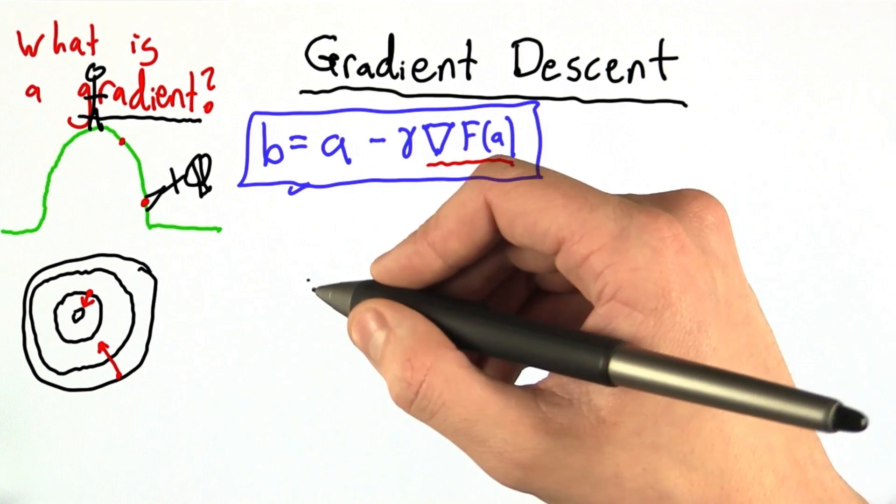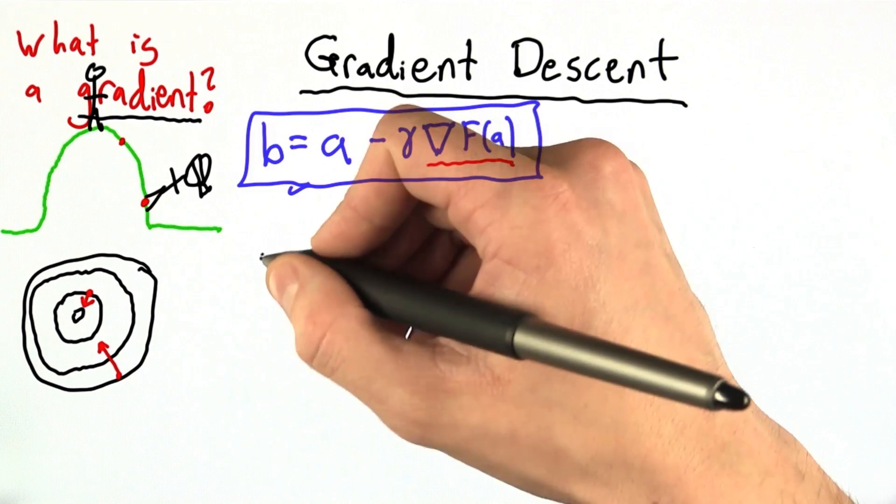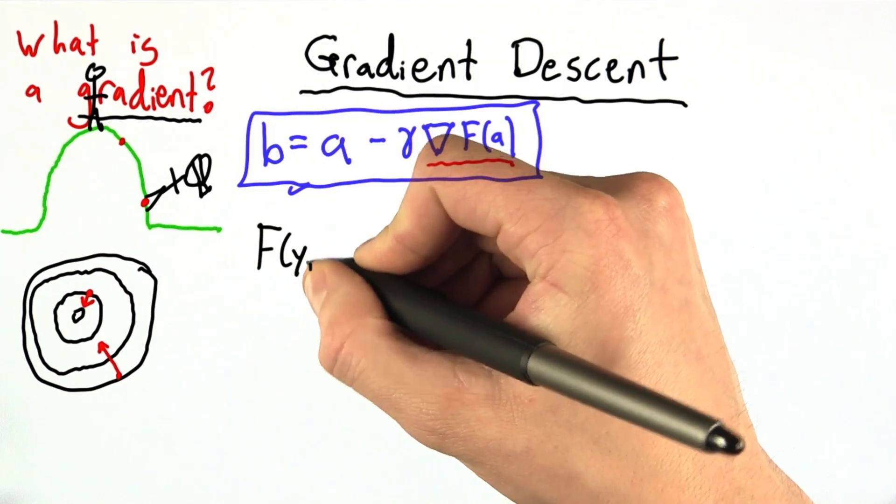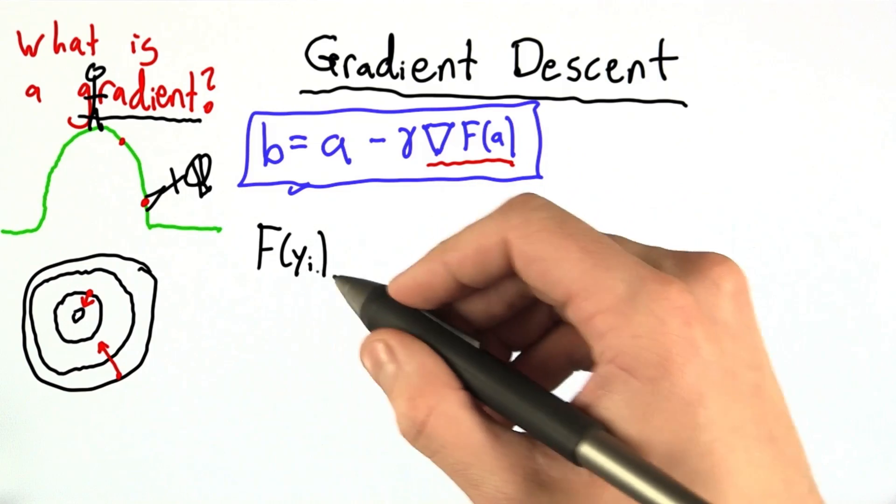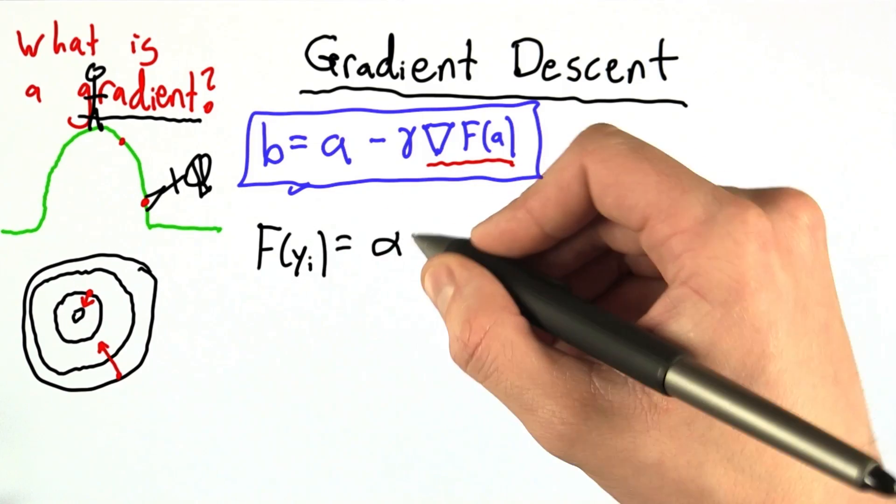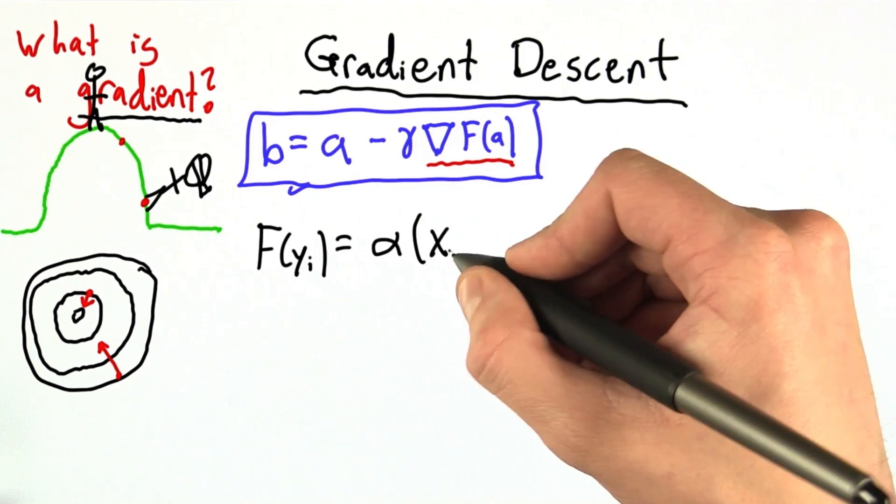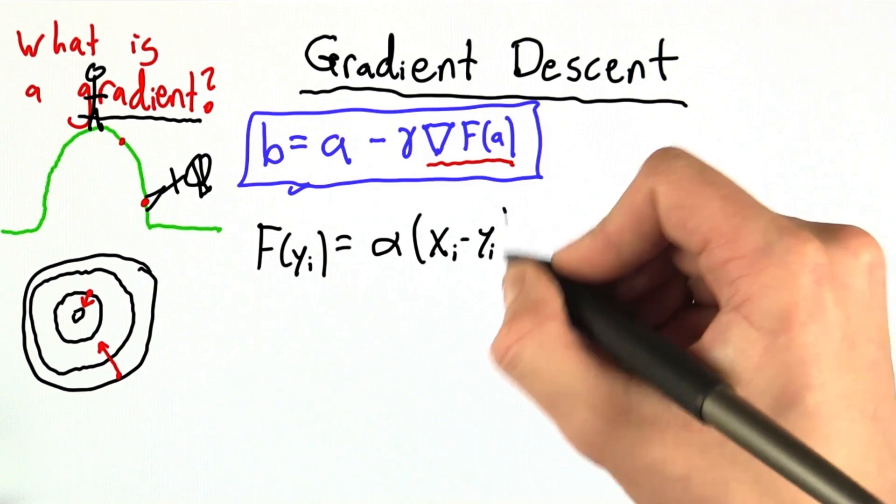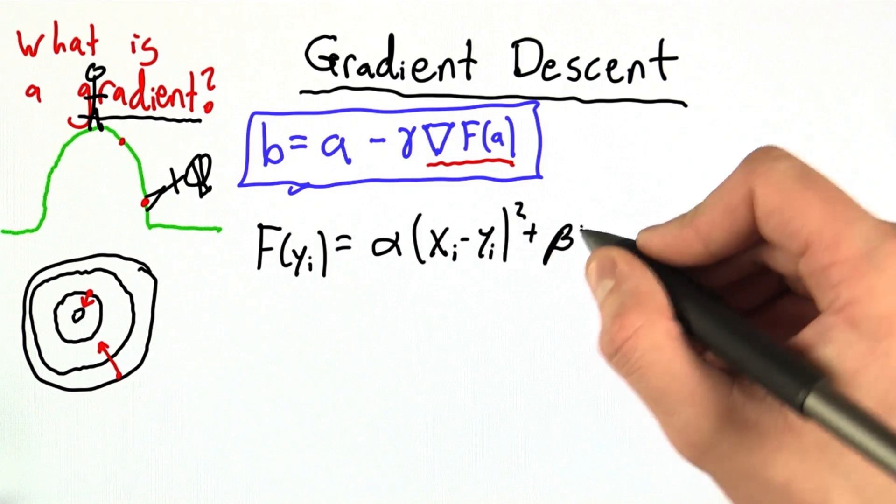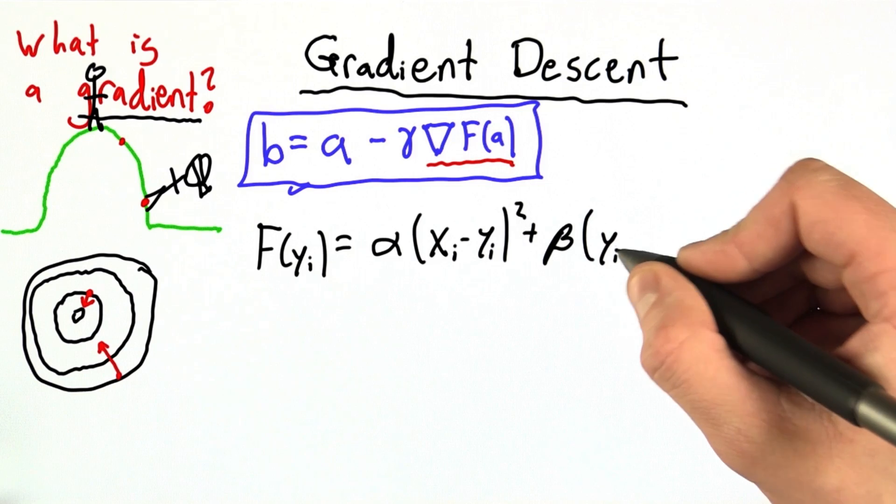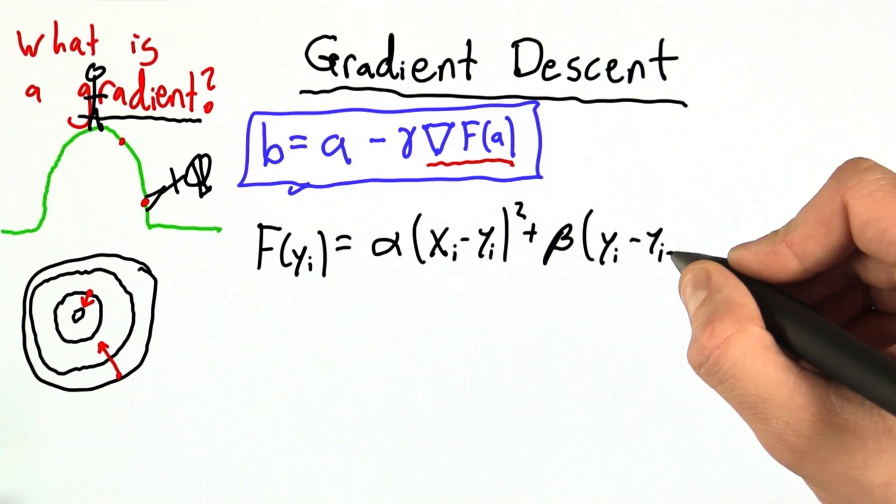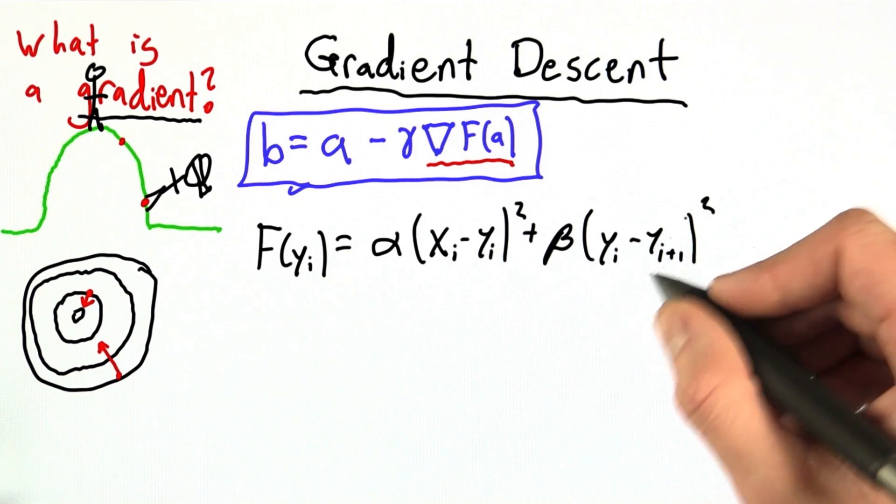So first we have to figure out what exactly is the function we're trying to minimize. For the purposes of the lecture, the function we were trying to minimize was a function of yi, and it was equal to some weighting alpha times xi minus yi squared plus some weighting beta times yi minus yi plus 1 squared, so the next y-coordinate.